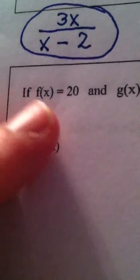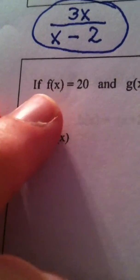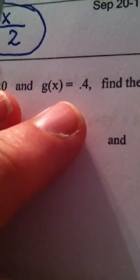Okay, ladies and gentlemen, on this next problem we're given two functions, f of x equals 20, and g of x equals 0.4, and we're asked to find the following,